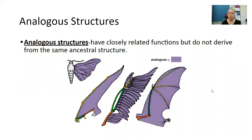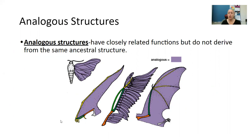Analogous structures have closely related functions, but do not derive from the same ancestral structure. Here you're looking at different wings — like this would be a bat, this would be feathers, and then of course a butterfly. So they have the same structures, but they don't have the same ancestors.